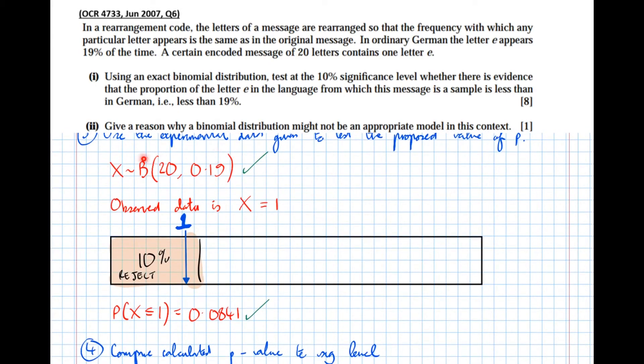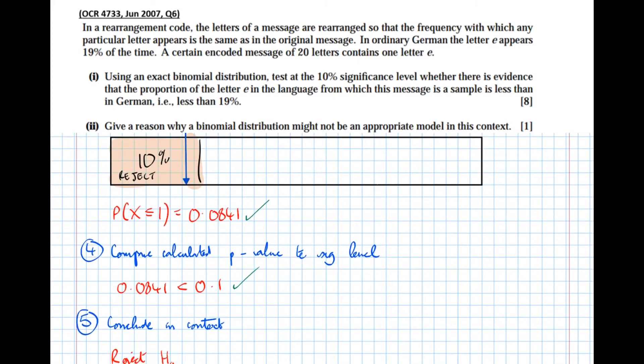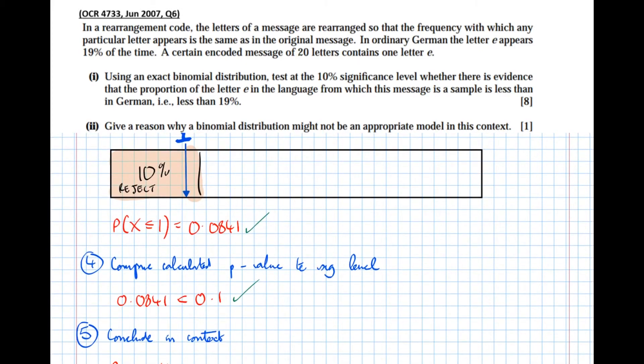Where p is 0.19 we did an experiment. We found that one, i.e. the letter e occurred one time out of 20. Now we found that that was so unlikely to happen, only an 8.41 percent chance of that happening under the original model, that actually the original model probably wasn't right.